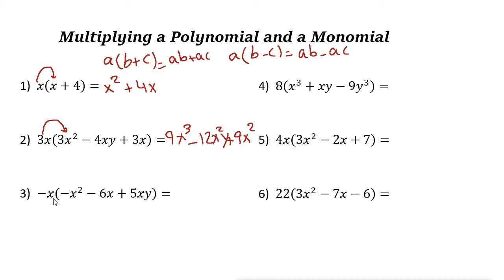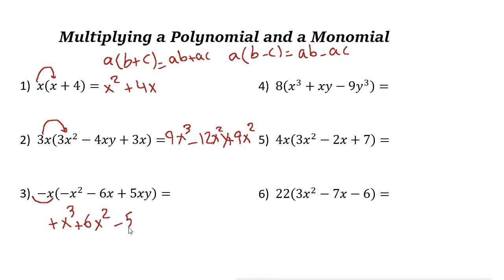Next one: negative x times (negative x² minus 6x plus 5xy). Negative times negative is positive, so x times x² is x³. Next: negative x times negative 6x — negative times negative is positive 6, and x times x is x squared, so plus 6x². Then: minus x times 5xy — x times x is x squared, so minus 5x²y.